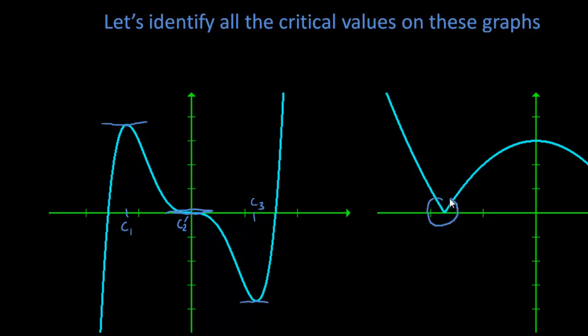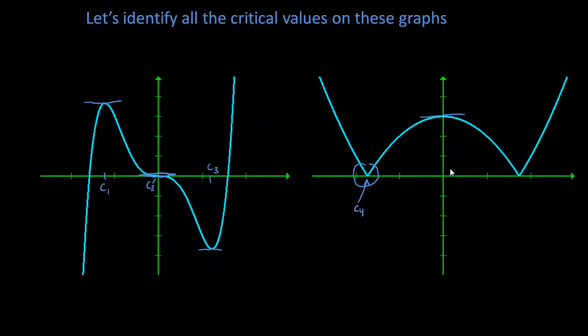Here's a spot where the derivative does not exist, so I'm going to call that c4. Here we have a slope of zero, so I'm going to call that c5 and finally c6.